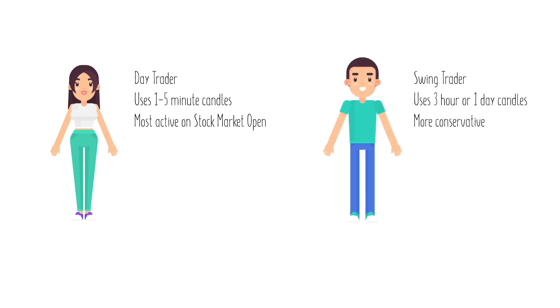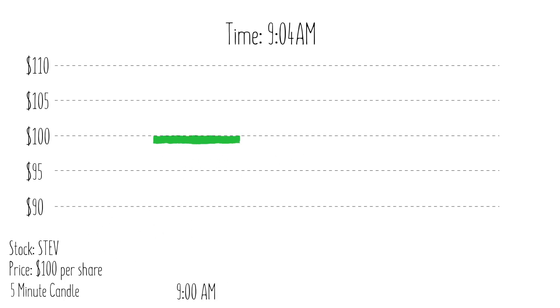So let's break it down with an example. For this example, we'll be charting a five-minute candle. We'll create a pretend stock called Stev, which is trading at $100.